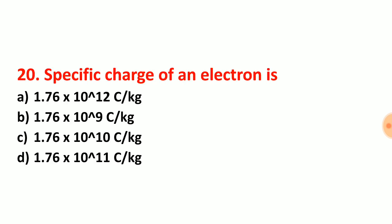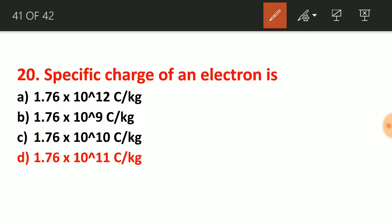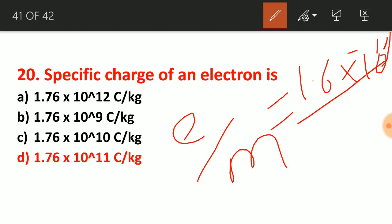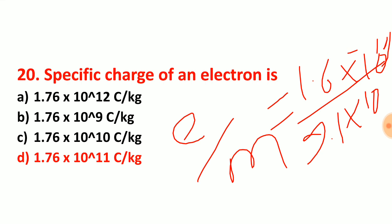Question number 20: the specific charge of an electron is 1.76 × 10¹¹ coulombs per kg. The value of E is 1.6 × 10⁻¹⁹ and mass M is 9.1 × 10⁻³¹. Dividing these gives 1.76 × 10¹¹ coulombs per kg. Thank you very much, all the best for your entrance examinations.